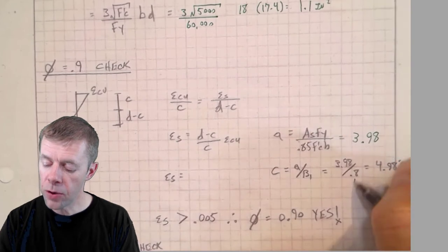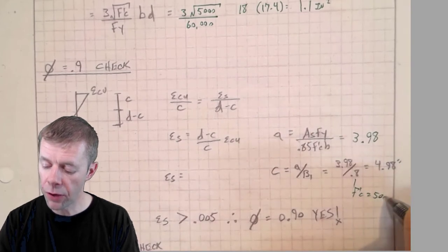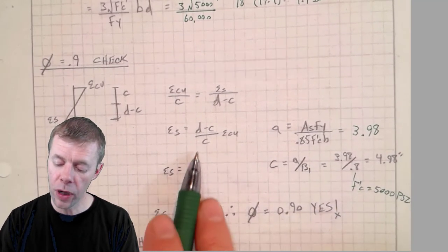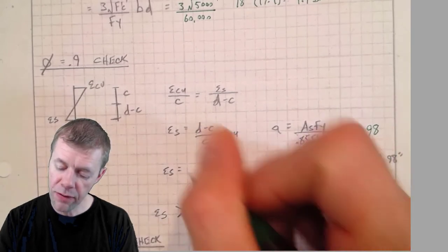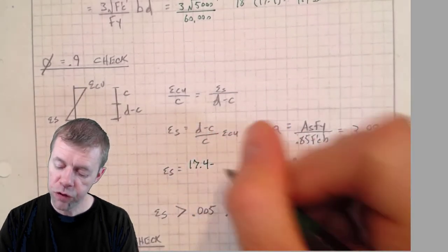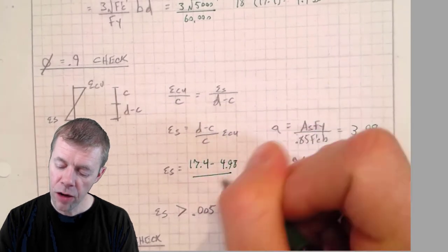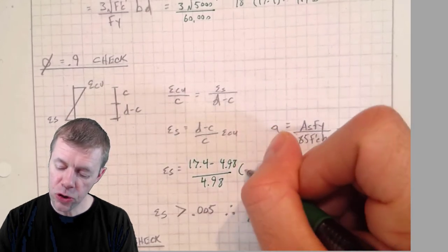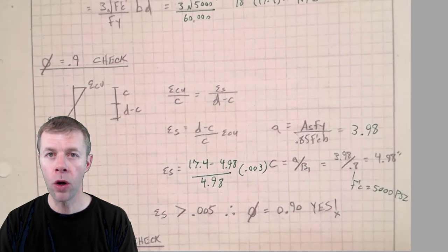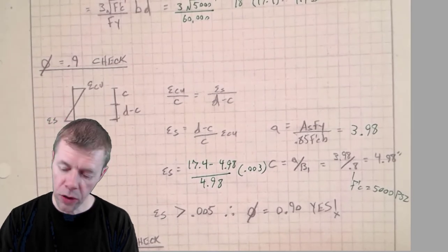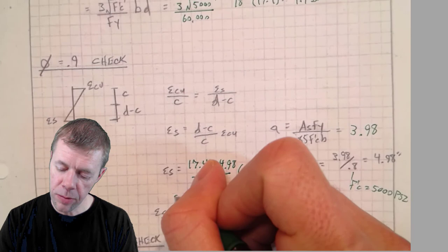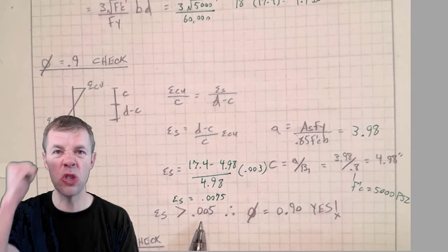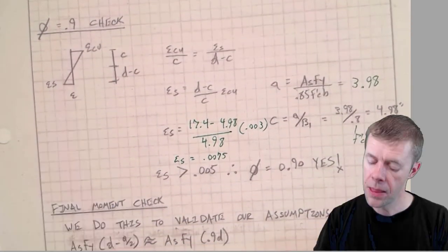So I plug in and I get 3.98 inches. I divide by beta 1, which is 0.8 because I'm using f prime c equal to 5,000 psi. My c is 4.98 inches. Now I get to plug into this equation: my D was 17.4 minus 4.98, divided by 4.98, multiplied by my epsilon c u, which is 0.003. If I calculate all of that, my epsilon s is equal to 0.0075, which is greater than 0.005, so yes, another good assumption.